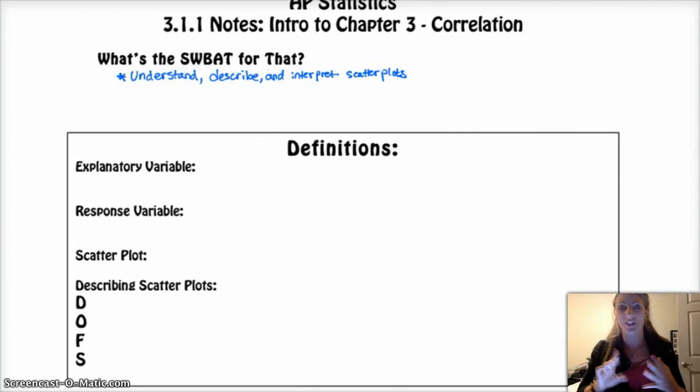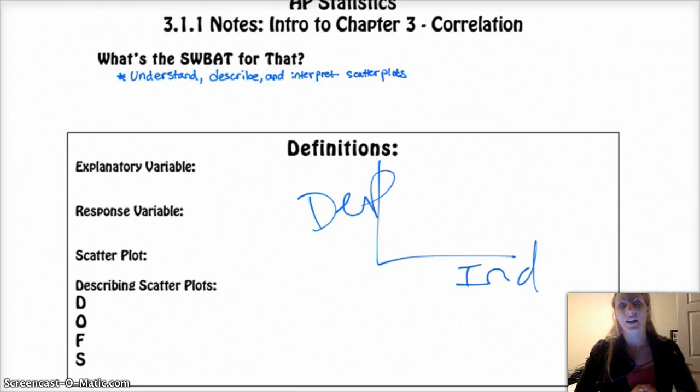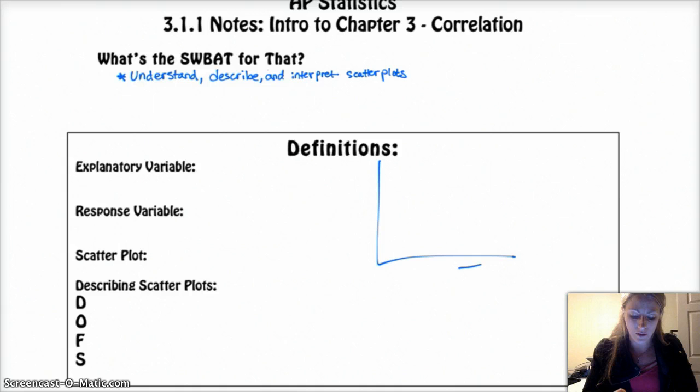A couple definitions. Explanatory and response variable. If you had me in algebra, I probably talked to you about independent and dependent variables. Independent stands alone, and the dependent variable depends on the other one. Usually, all the time, independent goes on the x-axis, and your dependent goes on your y.